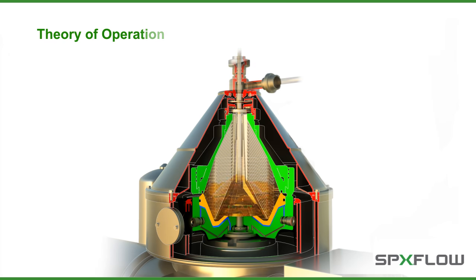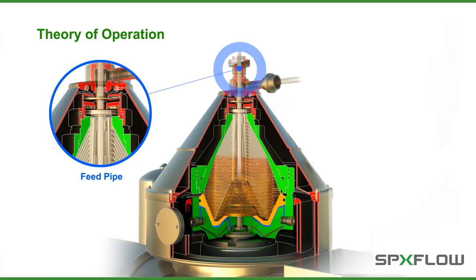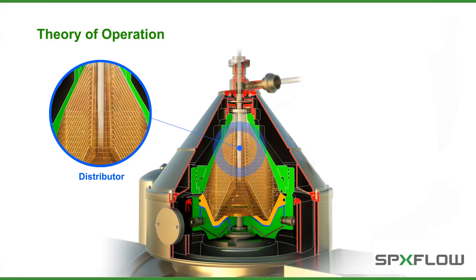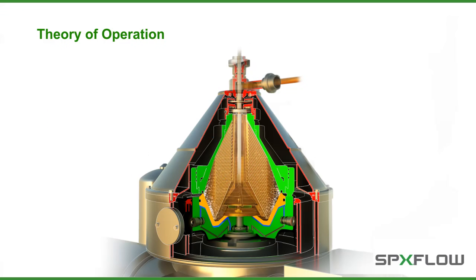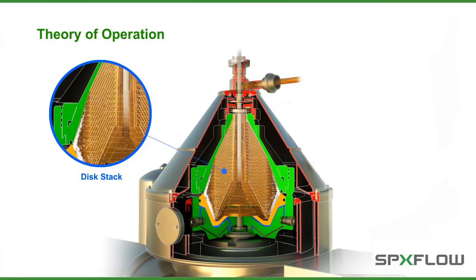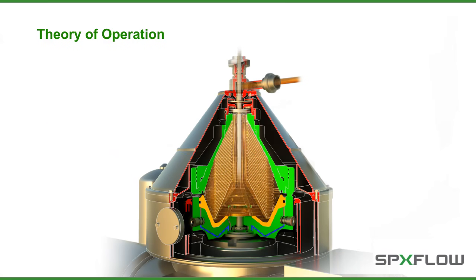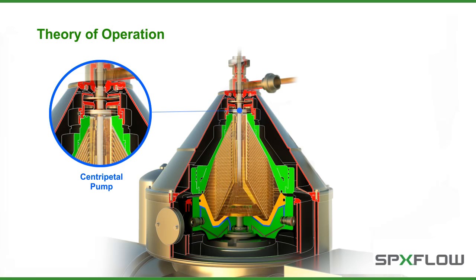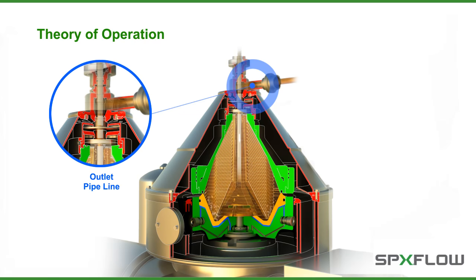The product flows into the bowl through a feed pipe and into the distributor where it is accelerated until it reaches the bowl's rotating speed. The distributor then conveys the product to the disc stack where the clarification process takes place. The clarified product then flows through the disc stack to the upper chamber of the bowl, where a fixed centripetal pump conveys it under pressure to the outlet pipeline.